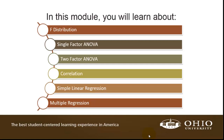We're first going to look at a distribution called the F distribution. In the past, we've talked about the normal distribution and the T distribution. This is just another probability distribution that we will use to do hypothesis testing. Then we're going to look at single factor ANOVA, two factor ANOVA, correlation, and then we'll get into simple and multiple regression.